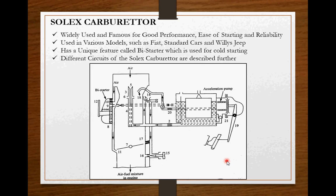Now today's discussion topic, Solex carburetor. This is widely used and famous for good performance, ease of starting and reliability. It is used in various models such as Fiat, Standard Cars and Willys Jeep. It also has a unique feature called Bystarter which is used for cold starting purpose. Now the different circuits of a Solex carburetor are described further.